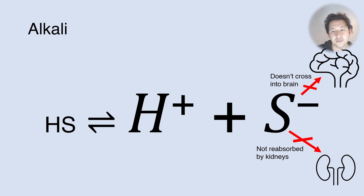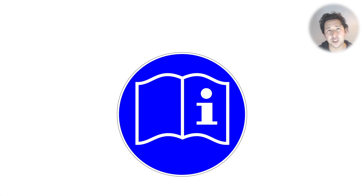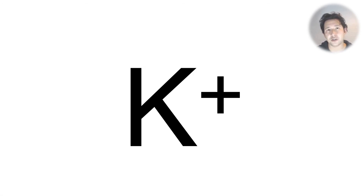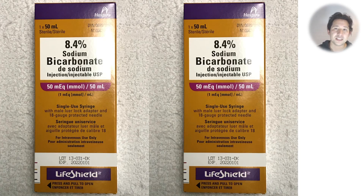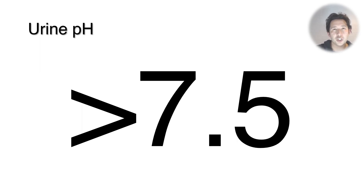In an alkali environment we get a lot more of the dissociated ionized form that can't get into the brain so easily, and it's not reabsorbed by the kidneys so you excrete it in your urine. To perform urinary alkalization, you first need to correct the potassium and make sure you've got a K of 3.5 or more. Then give 100 millimoles of sodium bicarbonate IV, followed by about 25 millimoles per hour as an infusion, aiming to keep the urine pH greater than 7.5.